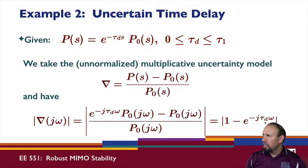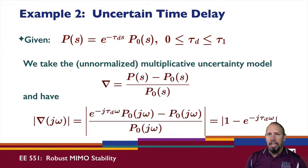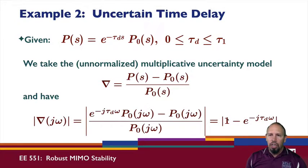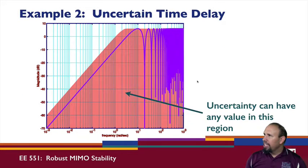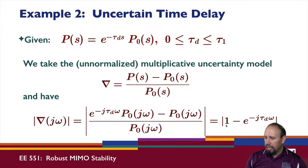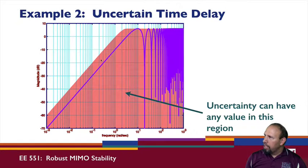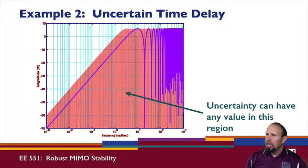Since tau_d is uncertain, we need to investigate how to find a weighting function for this uncertainty. Looking at the quantity |1 - e^(-j * tau_d * omega)| as a function of frequency, for a specific value of tau_d this gives a particular frequency response. We can produce a Bode-like plot of it, and the shaded salmon/pink area shows what happens as we vary tau_d from zero to tau_1.